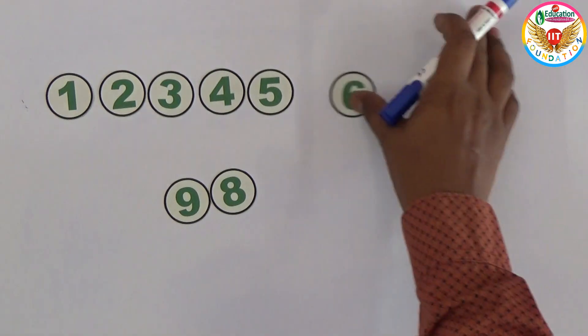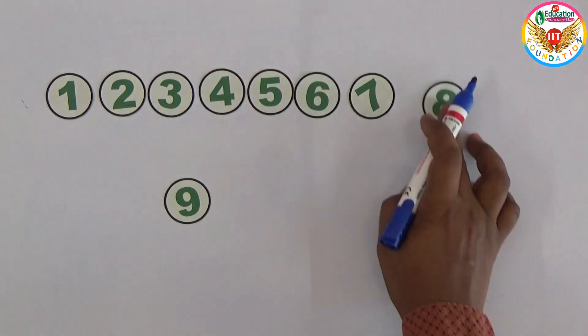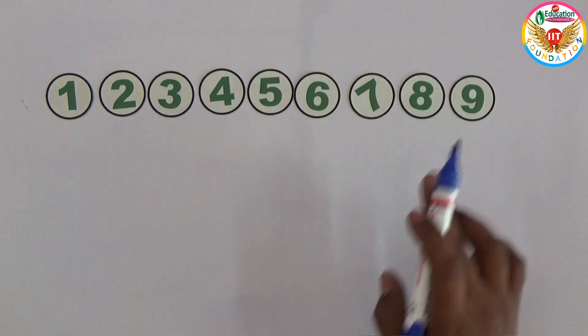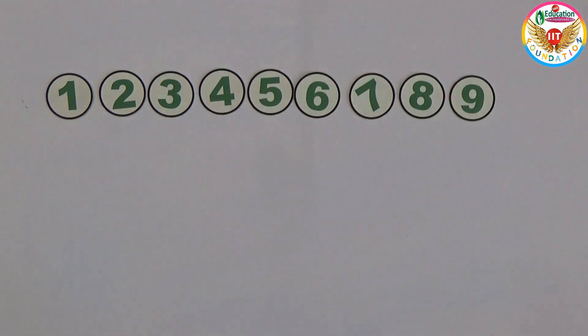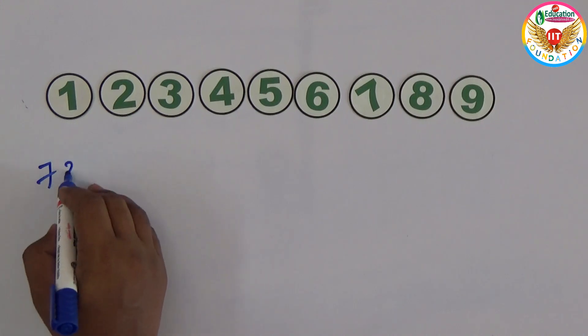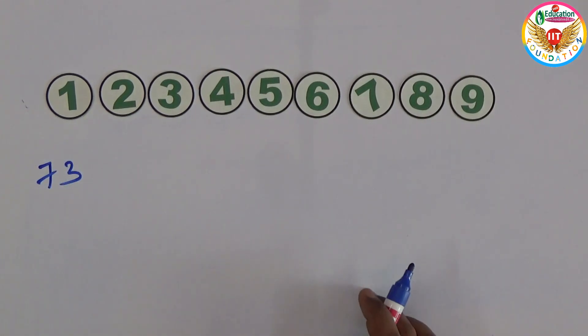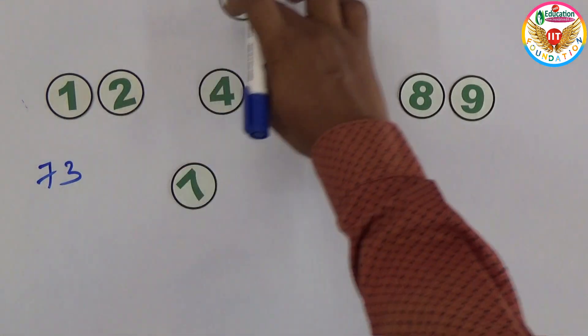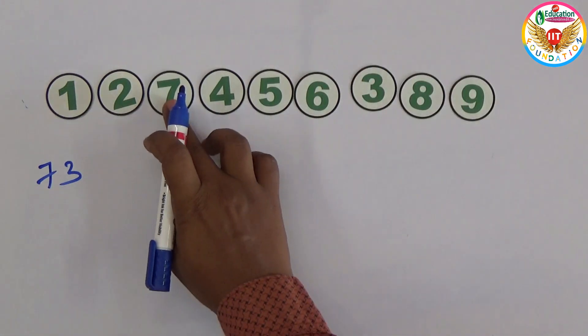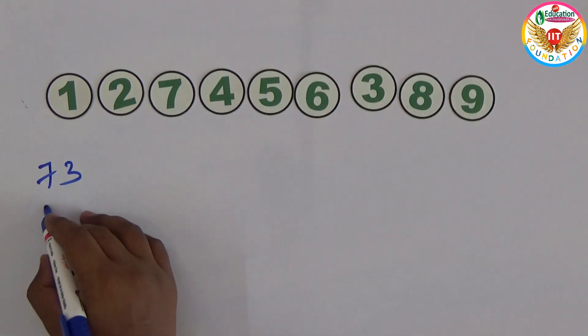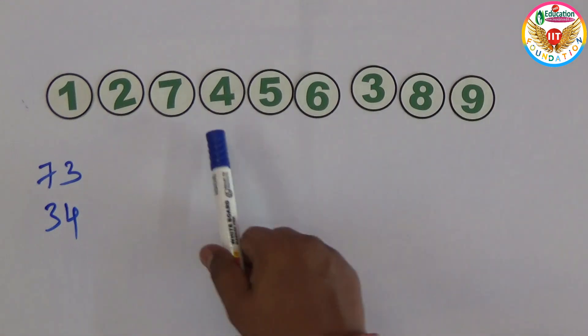Okay, 7 and 3 interchanging. 7's place 3 and 3's place 7, right. And 3 and 4, 3 and 4 let me interchange.